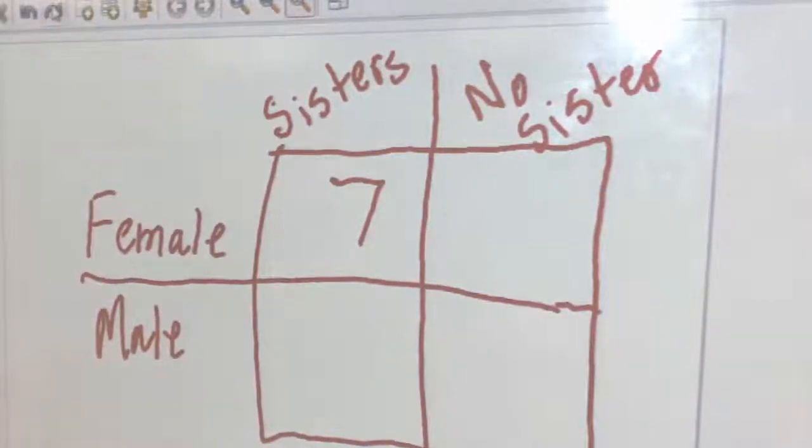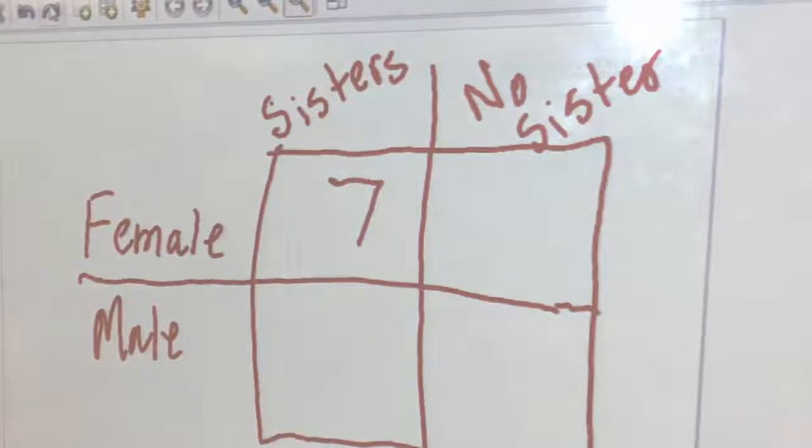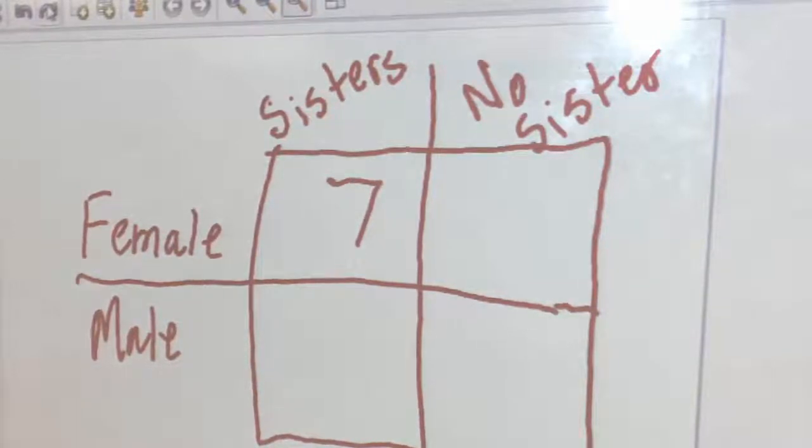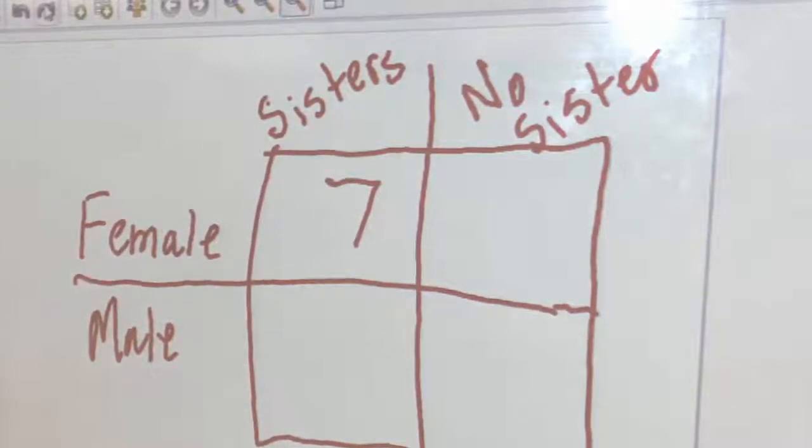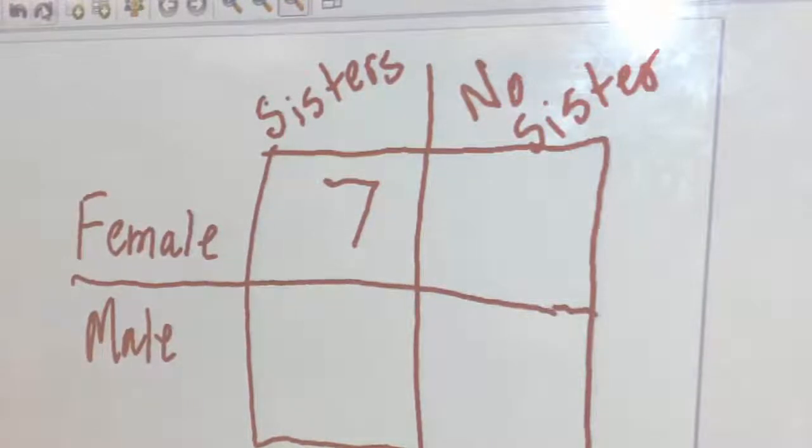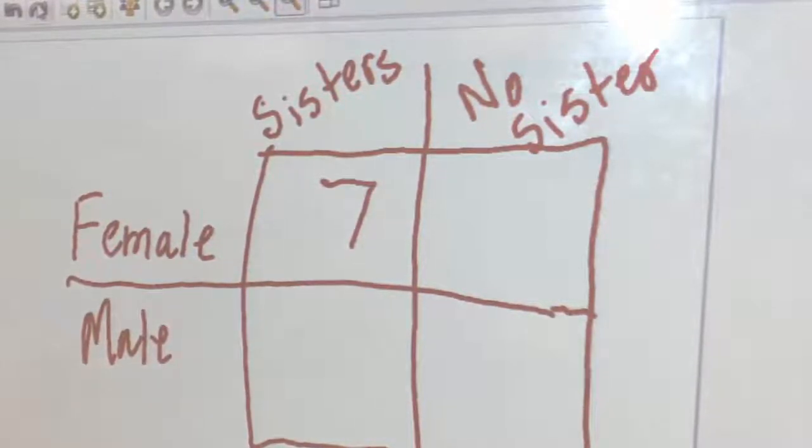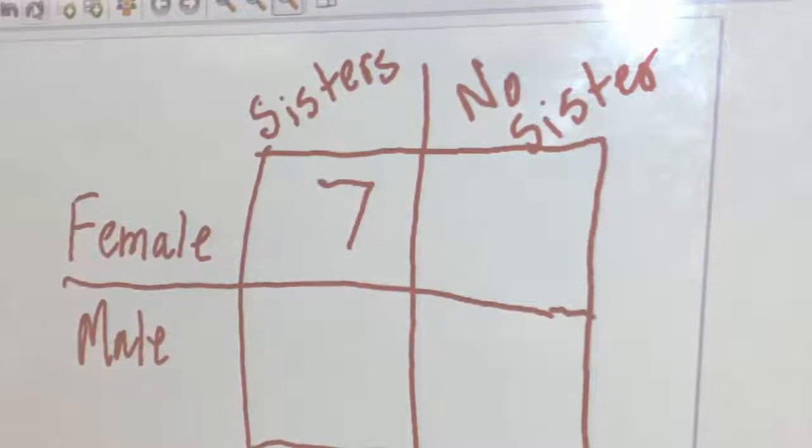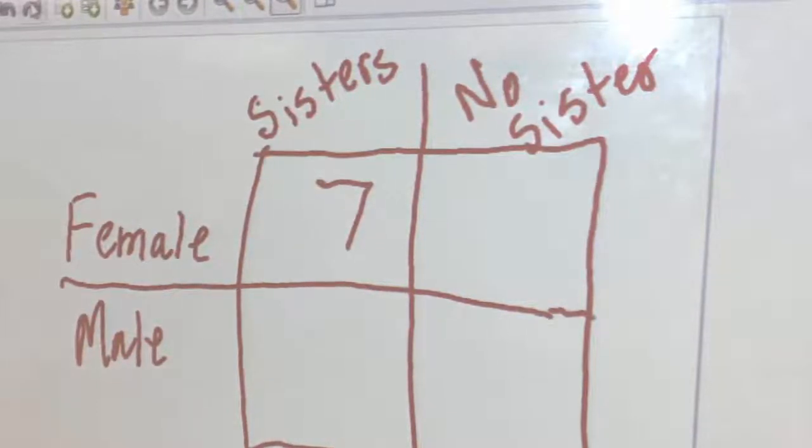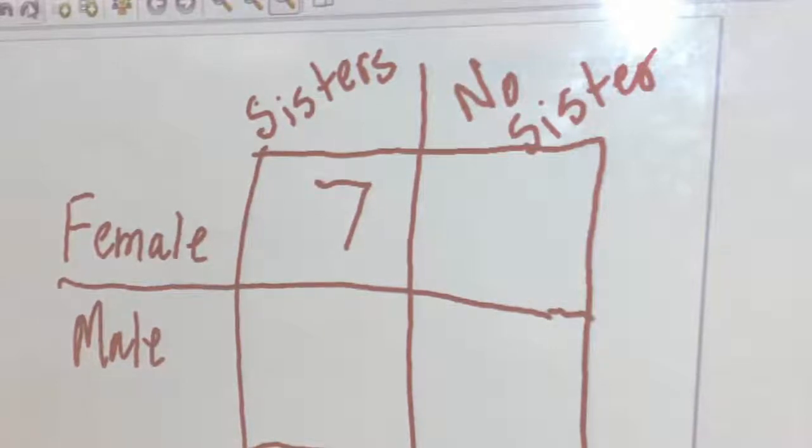So now to fill in my information, I'm going to look at my data. So I'm going to start with this box right here. I'm only going to talk to the females because it's in this row for females. Okay, so of my ladies who have sisters, so those are my ladies in the back, I'm going to count how many ladies I have and how many is that? Six, seven. Seven. You got to include yourself.